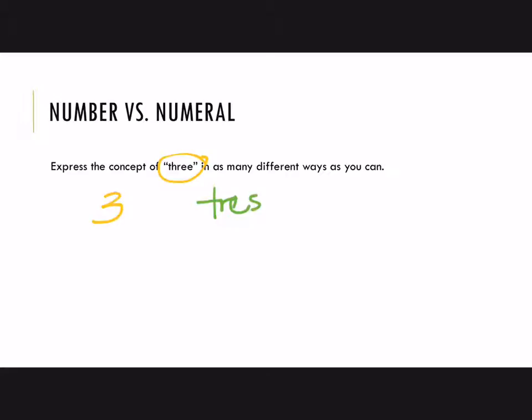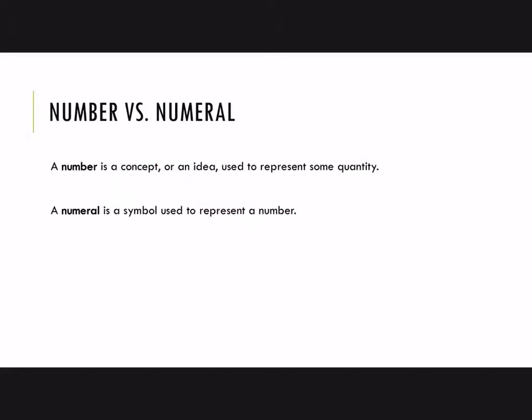There are many different ways to say three. So let's make a distinction: a number is a concept or an idea used to represent some quantity. We have this idea of three that we can convey in multiple ways. A numeral is a symbol that's used to represent a number.